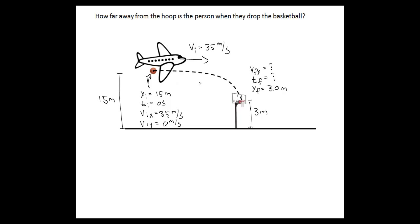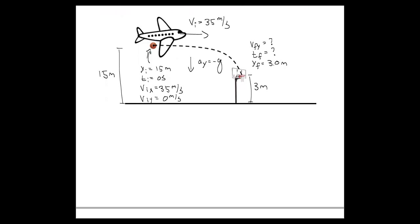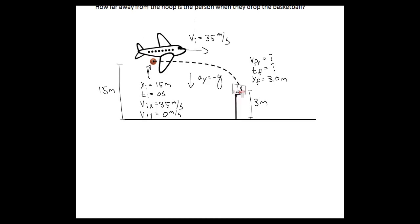Throughout all of this, the ball will accelerate down with an acceleration of minus g in the y direction. We also forgot to label the initial x position — let's just call that 0 meters. The final x position is also unknown, and actually that's what we're trying to find.